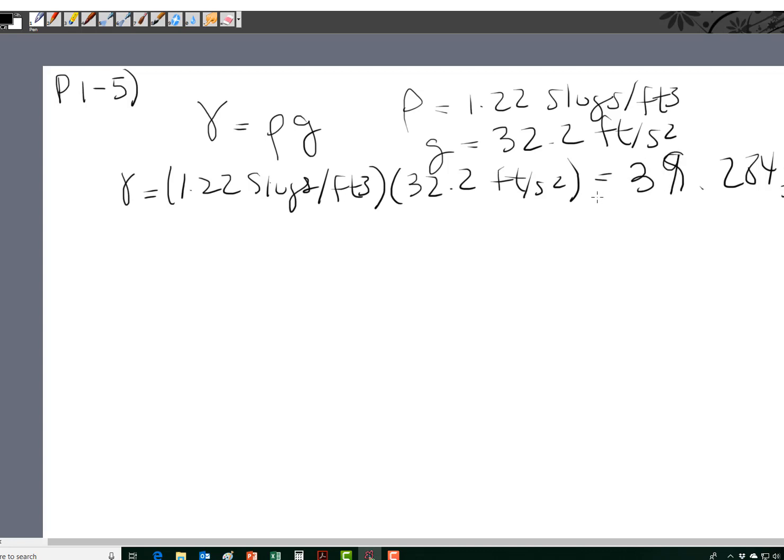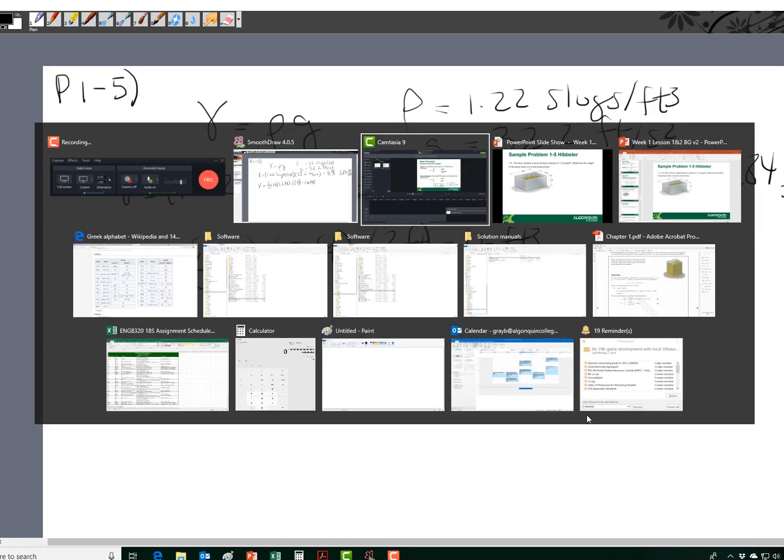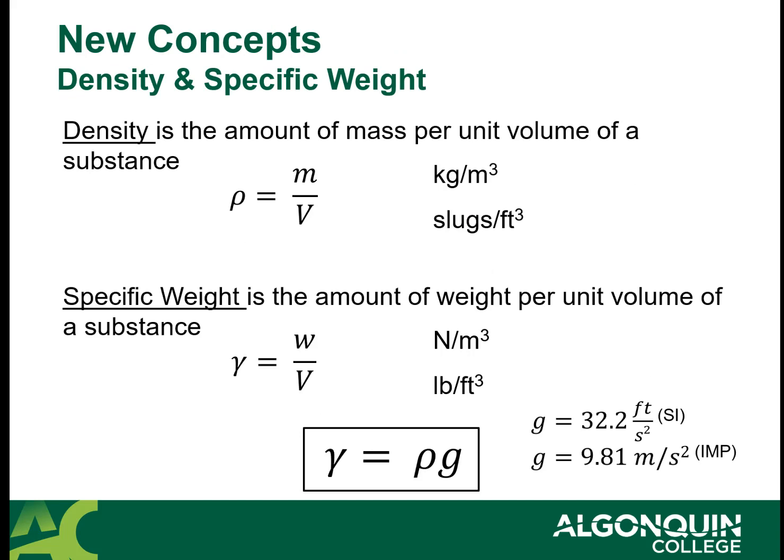So what were we asked? We were asked what is the weight of the liquid. Now that we have the specific weight, what we need next is to multiply this by the volume. The volume is equal to 4 feet by 2 feet by 2 feet, which is 16 feet cubed. Let's go back and look at our slide. Remember that gamma is equal to the weight divided by the volume. So if we want the weight, we need to take our gamma and multiply it by the volume.